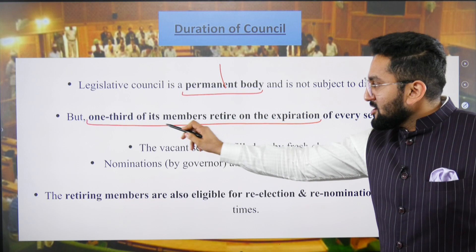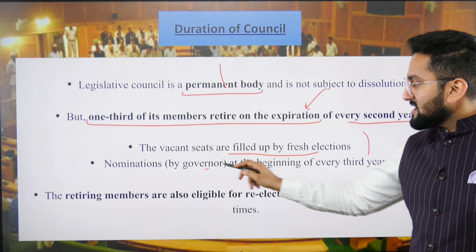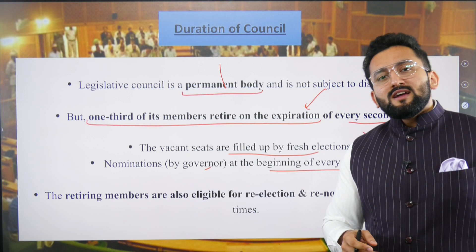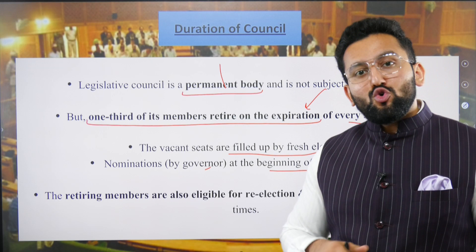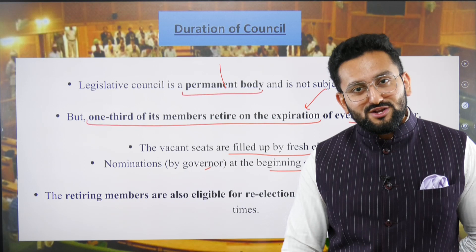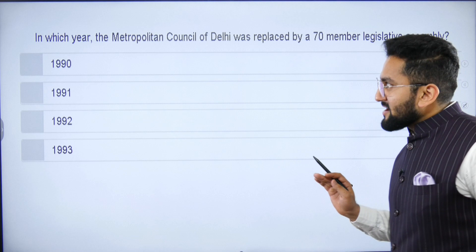The legislative council is a permanent body — equate this with Rajya Sabha. One-third of its members retire on expiration of every second year, and vacancies are filled by fresh elections or governor's nomination at the beginning of every third year. Each member's individual tenure is six years. However, saying 'the tenure of the legislative council is six years' would be incorrect — it is a permanent house with no fixed tenure as a body.